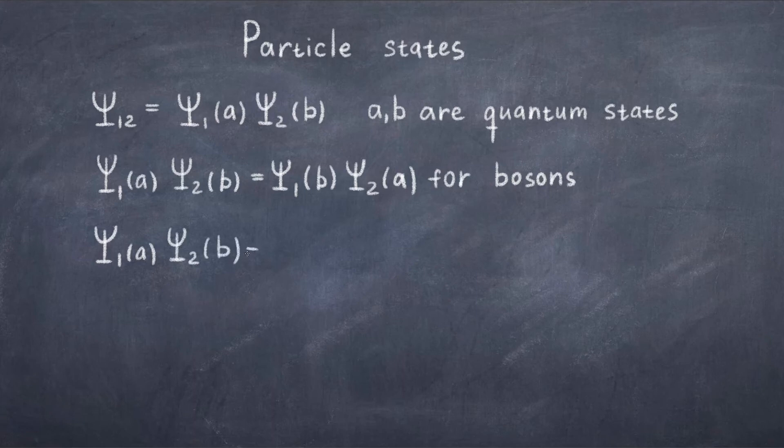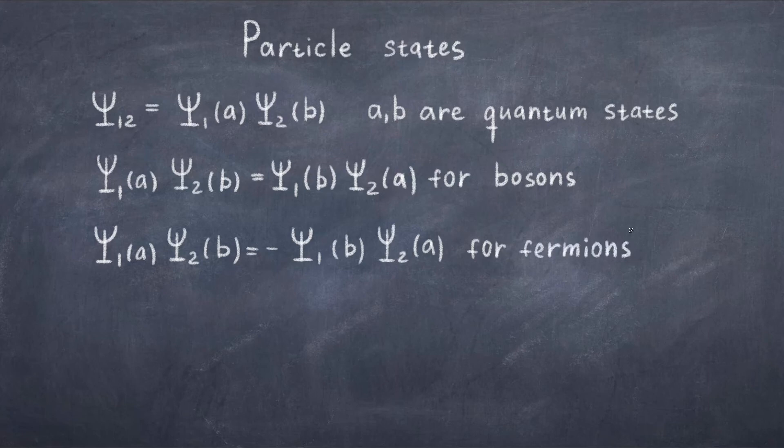Now as I mentioned earlier, fermions are anti-symmetric, and you can maybe already guess what happens in this case. We get that psi 1 in state A times psi 2 in state B is equal to minus psi 1 in state B times psi 2 in state A. There is a minus sign penalty for swapping anti-symmetric particles. This is fundamental in giving the universe structure as we will discuss later.